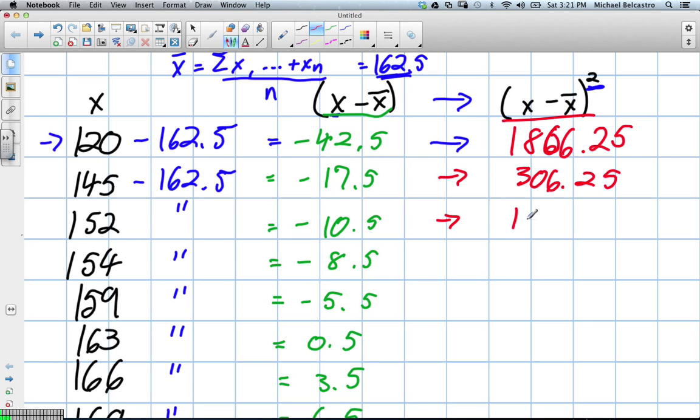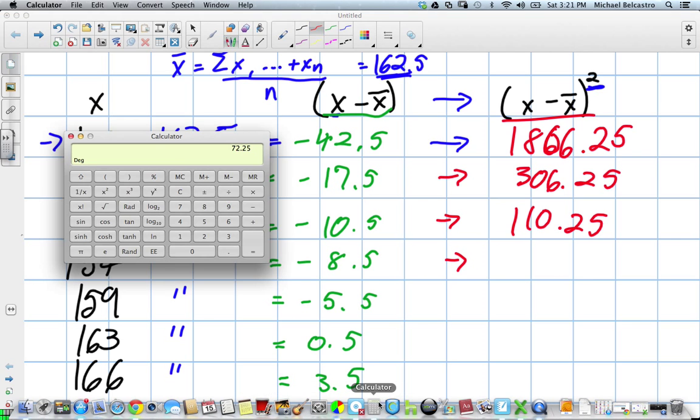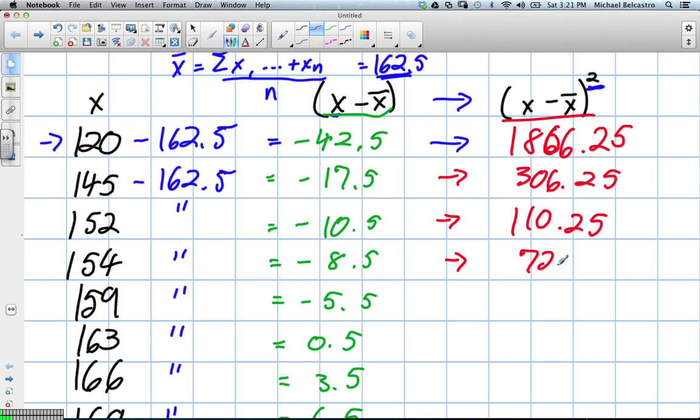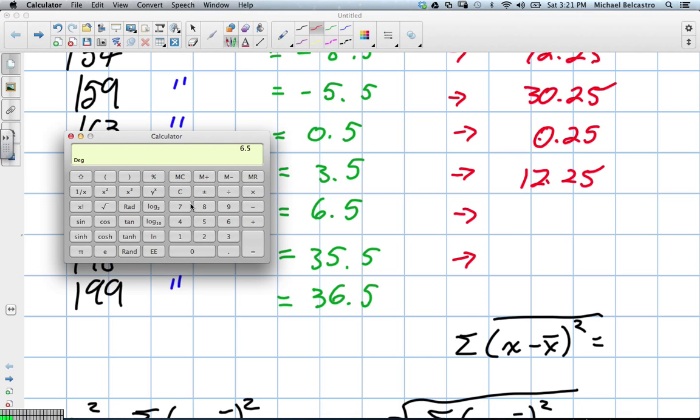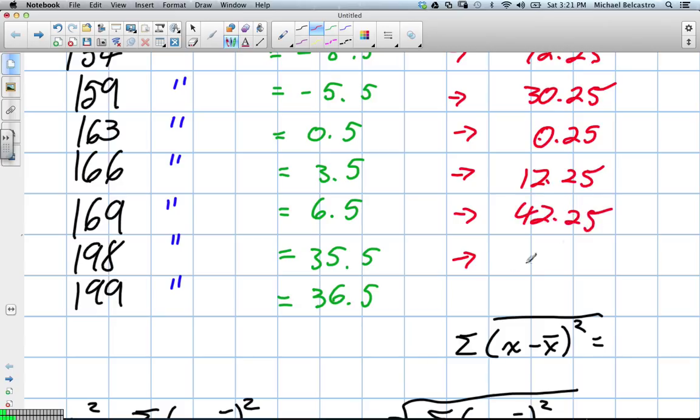So, this is a bit tedious. Jump ahead to the 5.5. I have the next one, so I'm going to do the 72.5. You put it in. I'll do the 0.5. You need to do the 3.5. And this is 0.25. 12.25. Do the 35.5. I'll do the 6.5. 42.25. 1,260.25. And the last one. 1,332.25.